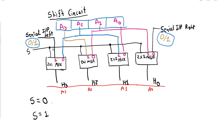The operation of this circuit is totally dependent on the value of S. If the value of S is zero there will be one operation, and if S is one there will be another operation. When S equals zero, all multiplexers will select input number zero. For the first multiplexer, input number zero is the serial input from the right side, which can be zero or one.